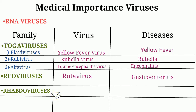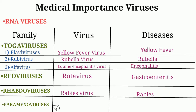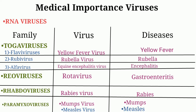The fourth family is Paramyxoviruses, which contains two medically important viruses: mumps virus, causing mumps disease, and measles virus, causing measles disease. Both mumps virus and measles virus belong to the same family — Paramyxoviruses.